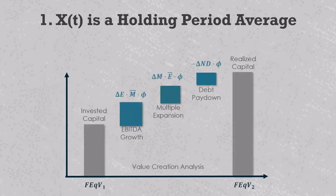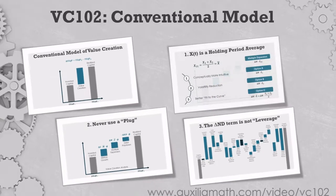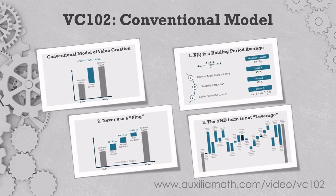So in our models you'll find holding period averages everywhere — not just for the multiple and the EBITDA, but also for revenue, EBITDA margin, ownership percentages, equity ratios, and so on. They provide results that are less volatile and in general make all the equations work better.